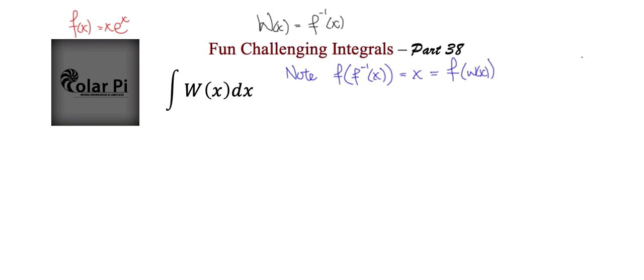Now, f of W of x means plugging in W of x right there. And therefore, it means replacing this x and that x with W of x. So we see that x is equal to W of x times e to the W of x. This will be important in a second. So let's underline it.